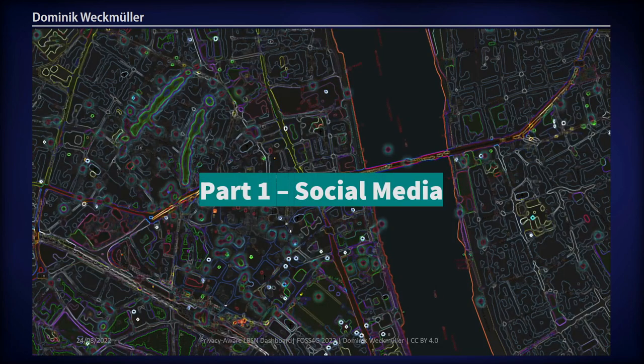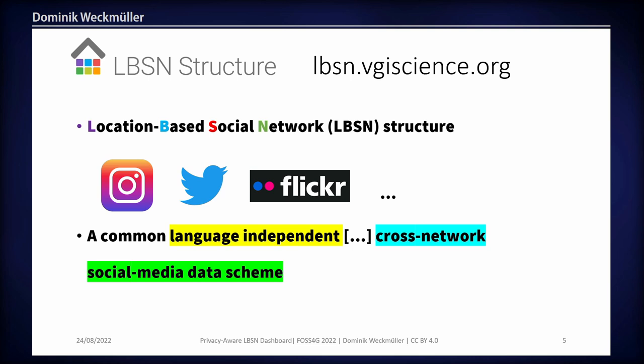Location-based social networks is a long title for the most common social media platforms we use, like Instagram, Twitter, Flickr, TikTok, even YouTube. All of these platforms tend to have some geospatial information attached — like a coordinate, an Instagram location, or something indicating a specific location for the data posted. For example, an Instagram post tagged with FOSS4G with a location here on site — people saying it was great — and you have that geotag meaning it took place here at FOSS4G.